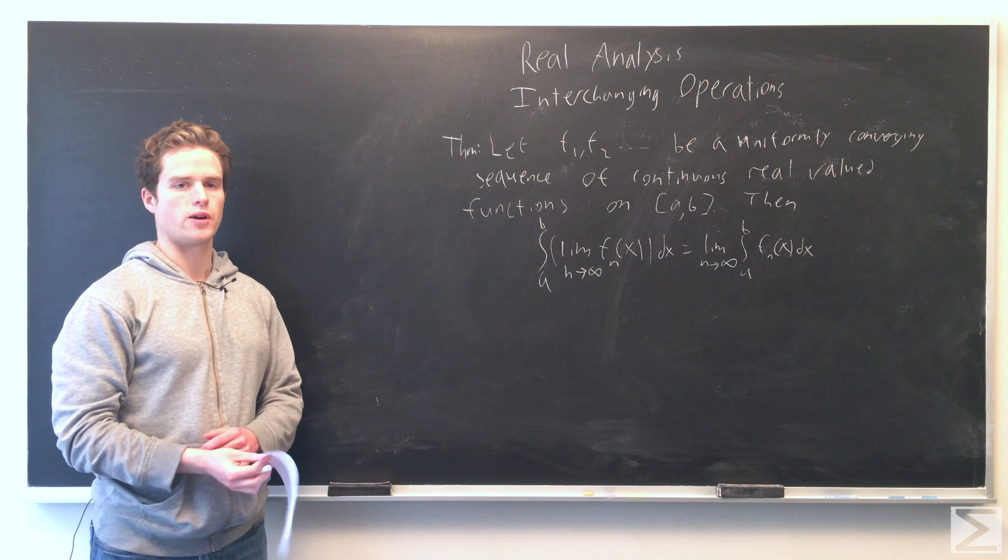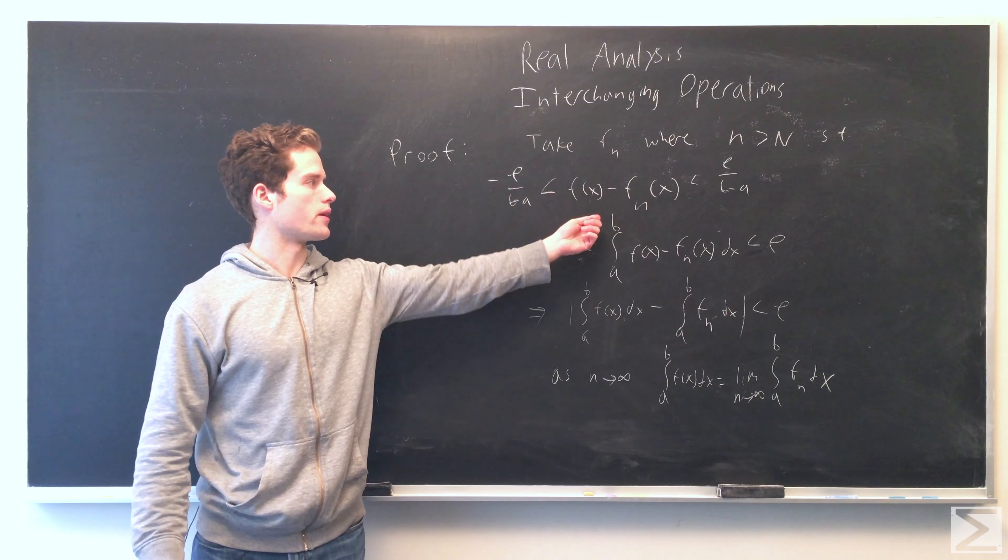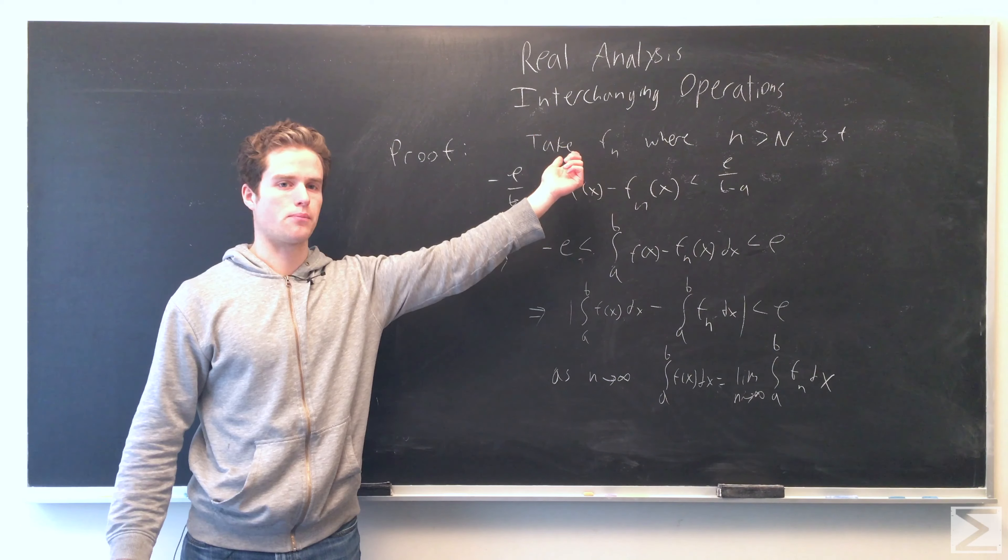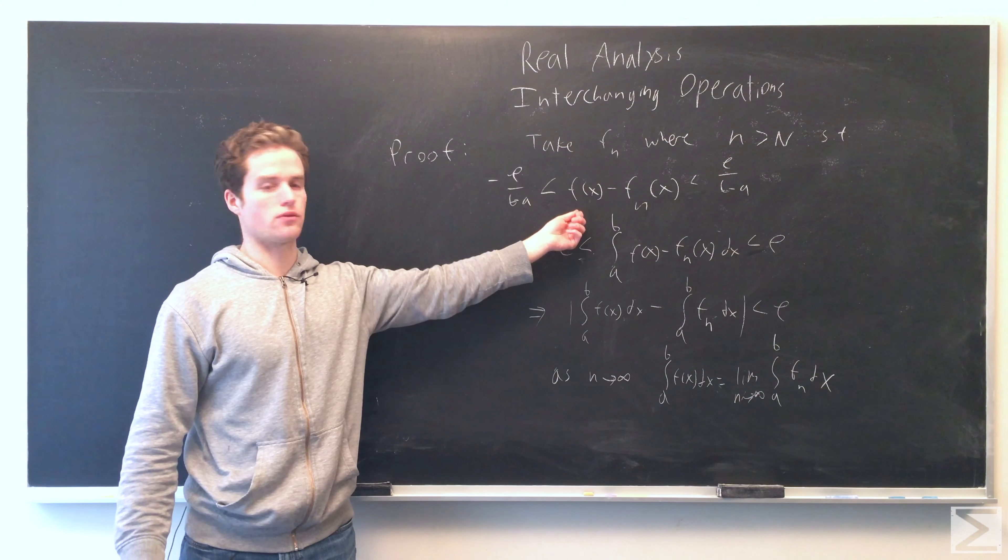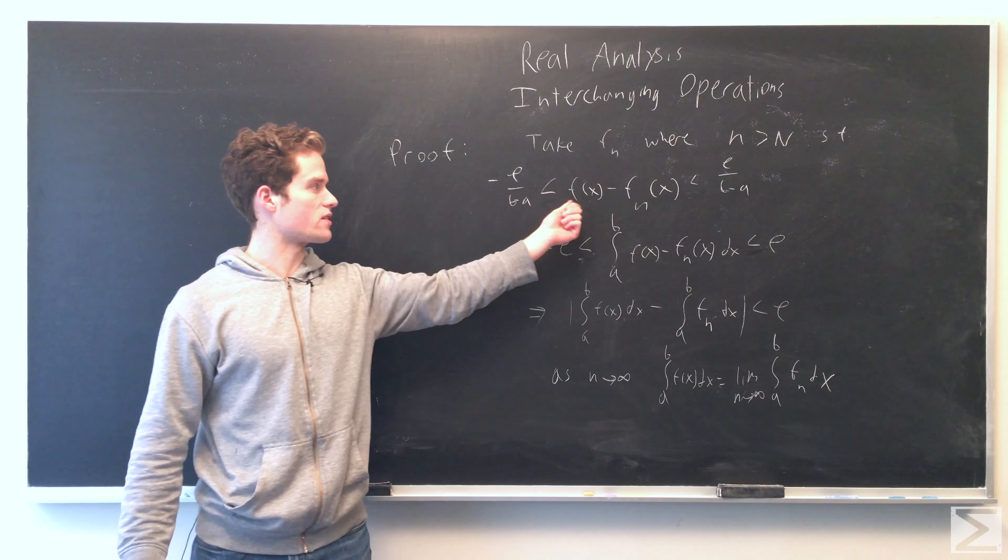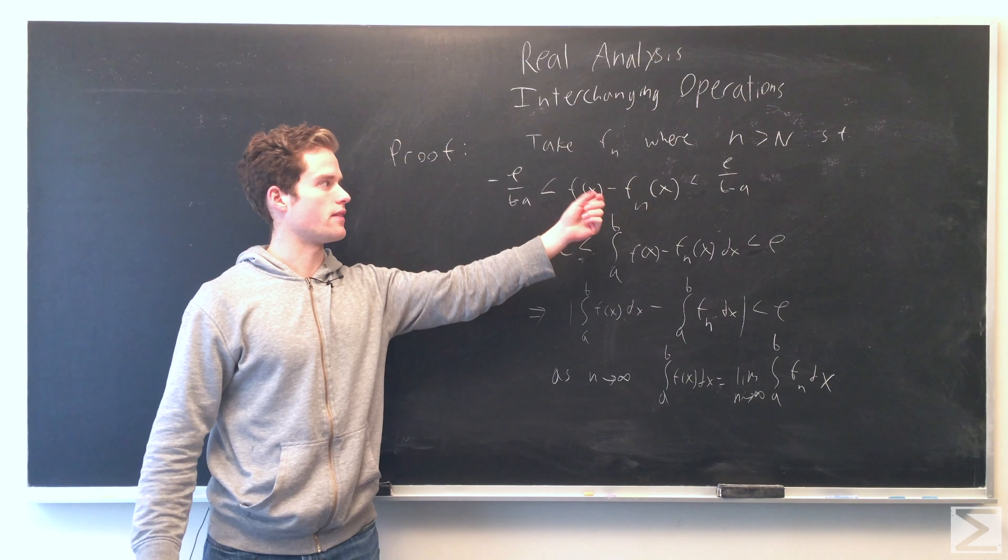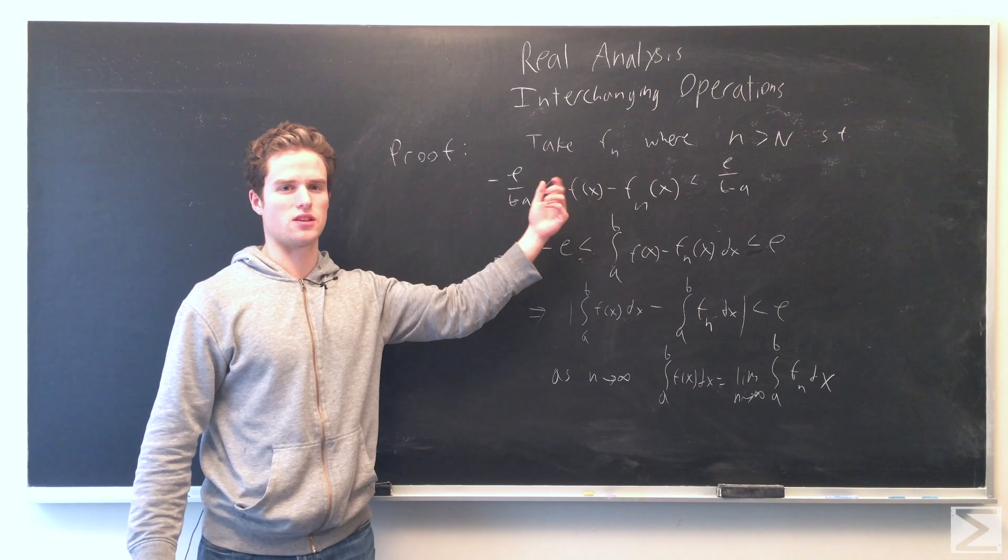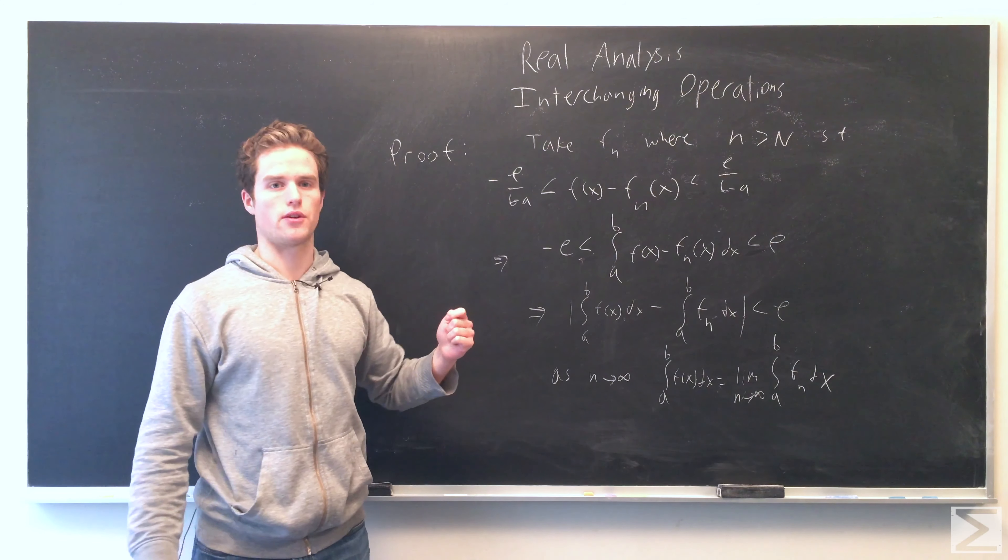So to prove this, we mainly just want to note that we can take little n bigger than some integer big N such that f(x)—where f(x) is the limit of f_n(x)—the absolute value of f(x) minus f_n(x) is less than ε over (b minus a) for some real number ε greater than zero, as small as we want.